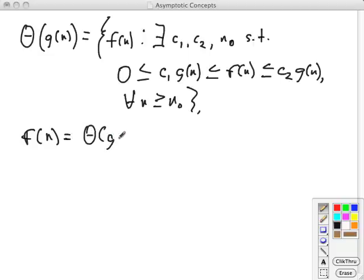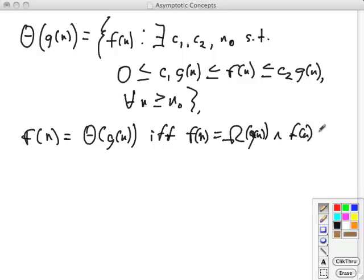f(n) is Θ(g(n)) if and only if f(n) is Ω(g(n)) and f(n), of course, is O(g(n)). So this is a situation where we bound from both above and below.